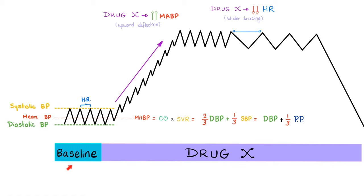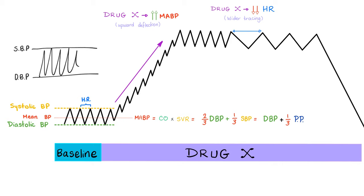Now pharmacology. Here is your baseline before receiving any drugs. Looking at the tracing: the upper limit is systolic blood pressure, the lower limit is diastolic blood pressure, and in the middle — slightly lower — is the mean arterial blood pressure. It's closer to the diastolic pressure because MAP equals diastolic plus one-third of the pulse pressure.